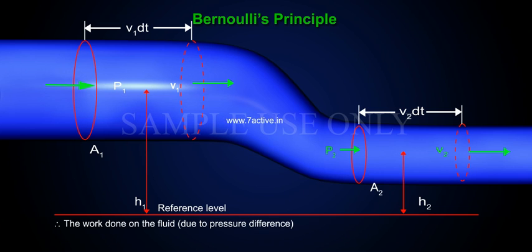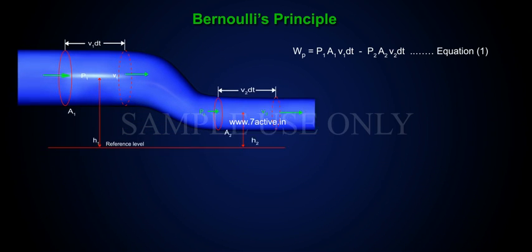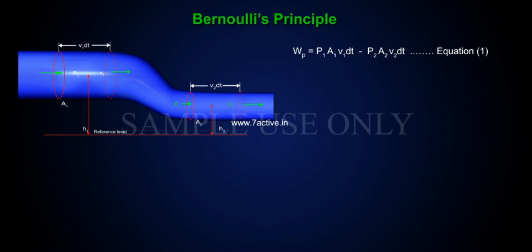Therefore, the work done on the fluid due to pressure difference WP is equal to P1 A1 V1 DT minus P2 A2 V2 DT. Equation 1.